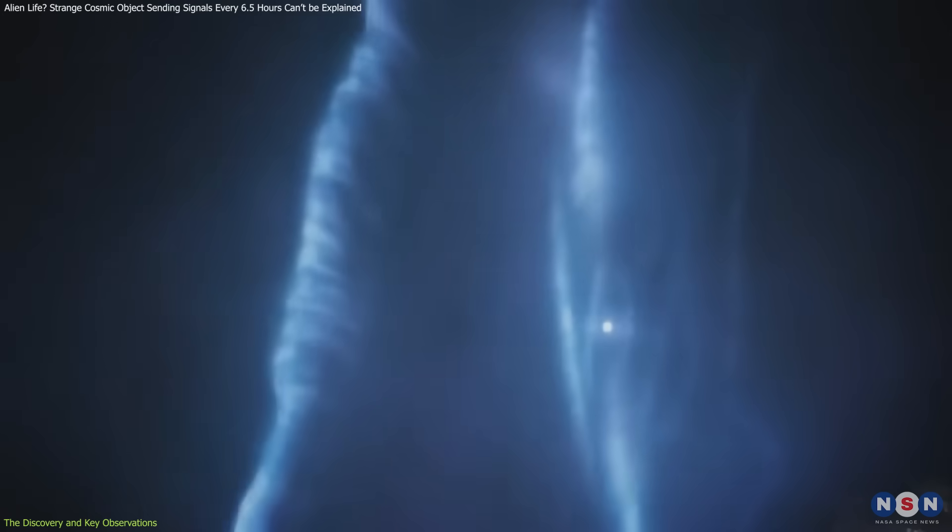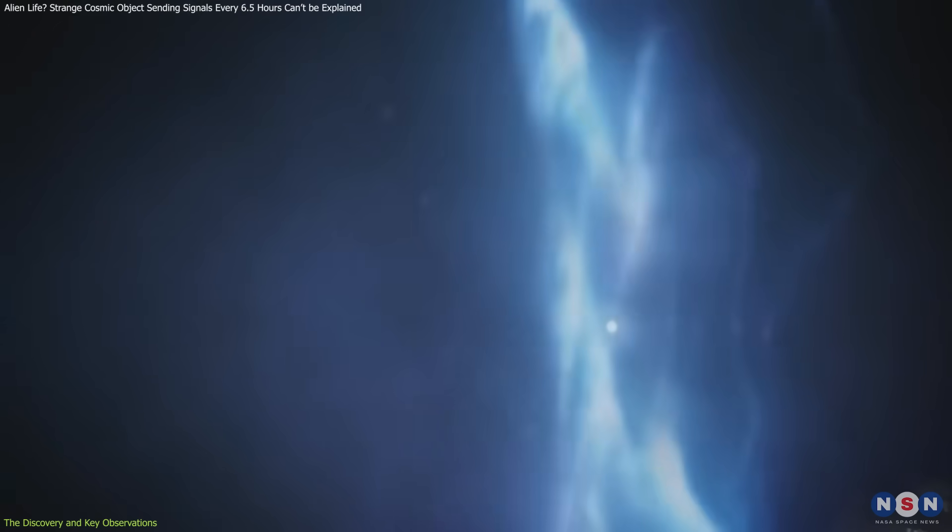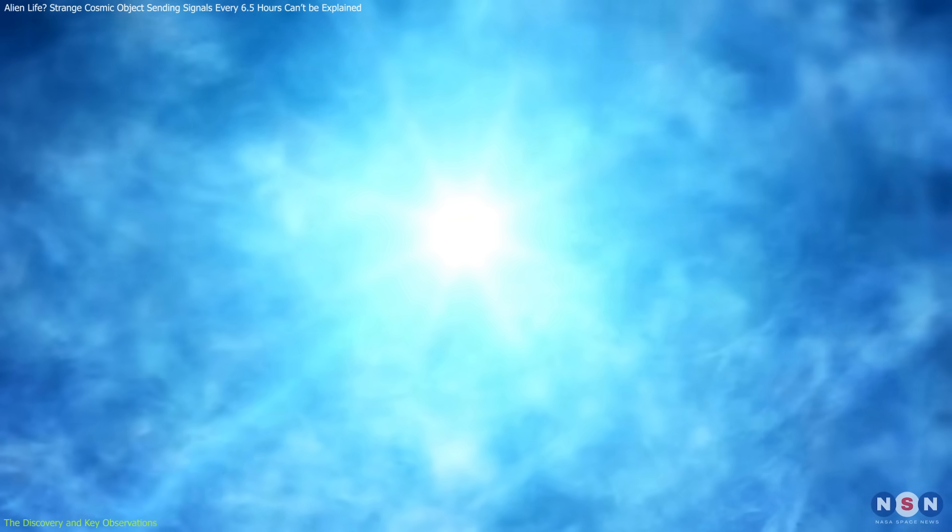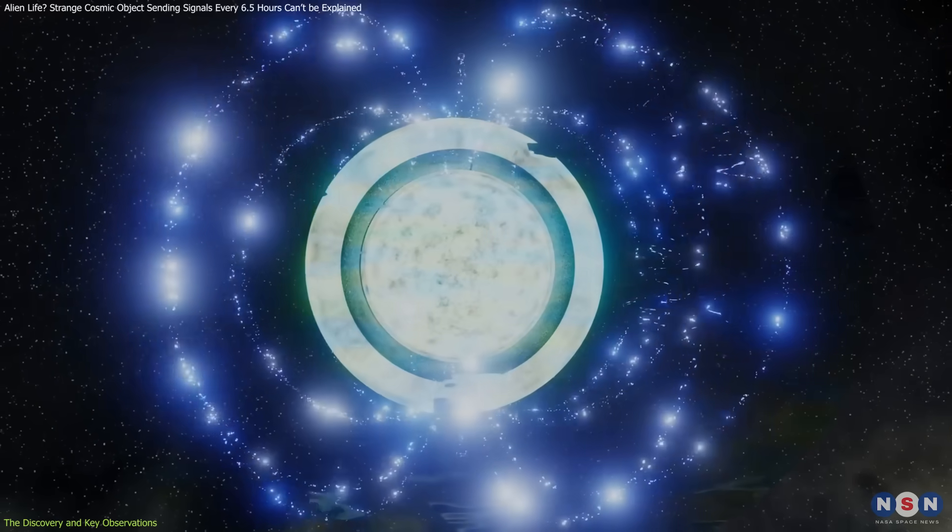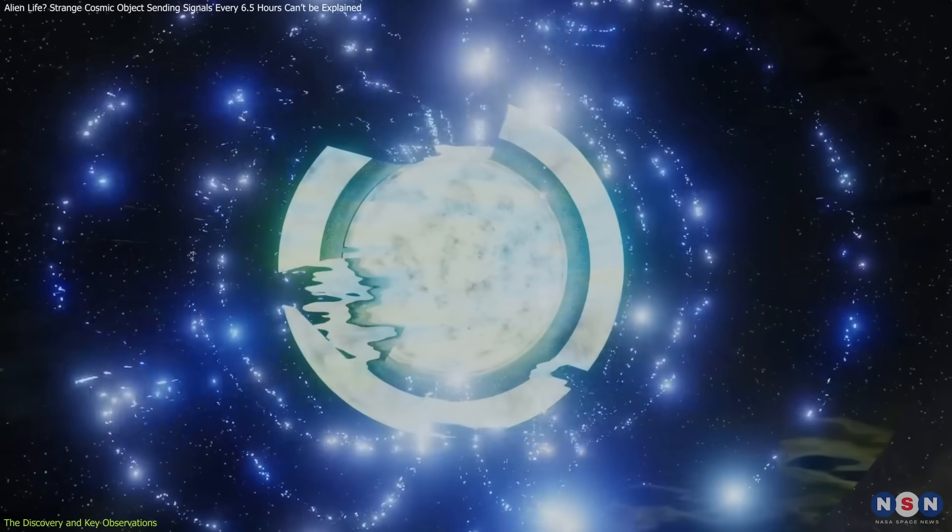The object's radio waves exhibit strong polarization, meaning that the light waves are aligned in a particular direction. This polarization suggests that the radiation originates from an environment with an extremely intense magnetic field, similar to those found in neutron stars and magnetars.